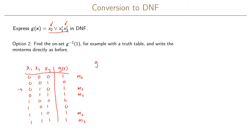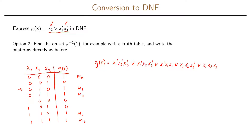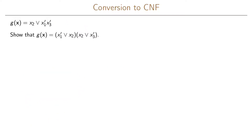We can immediately write the disjunctive normal form as x1'x2'x3' OR x1'x2x3' OR x1'x2x3 OR x1x2x3' OR x1x2x3. This was just another approach to write the DNF, and you can use whichever method you feel most comfortable with or whichever is easiest for the given problem.